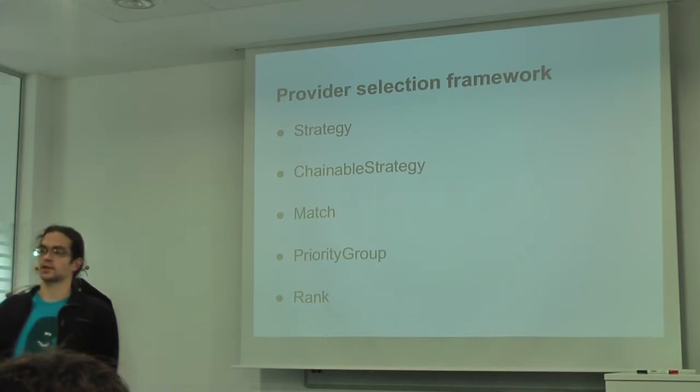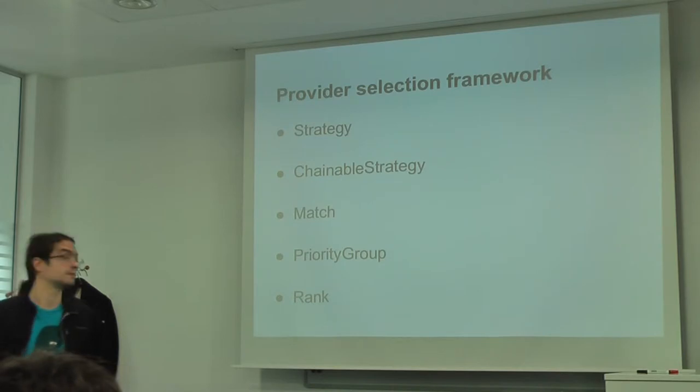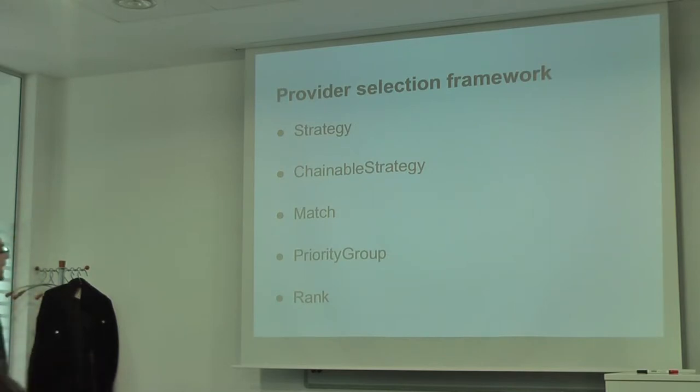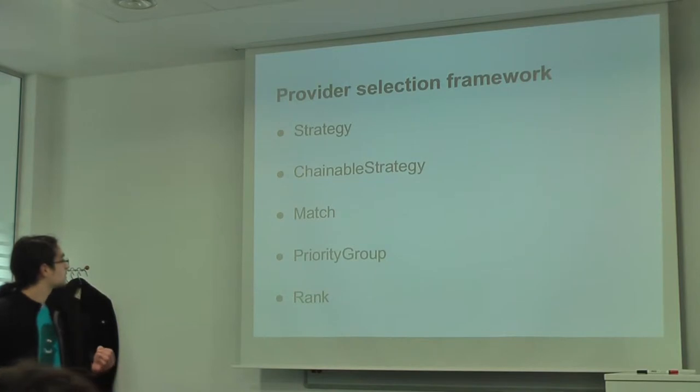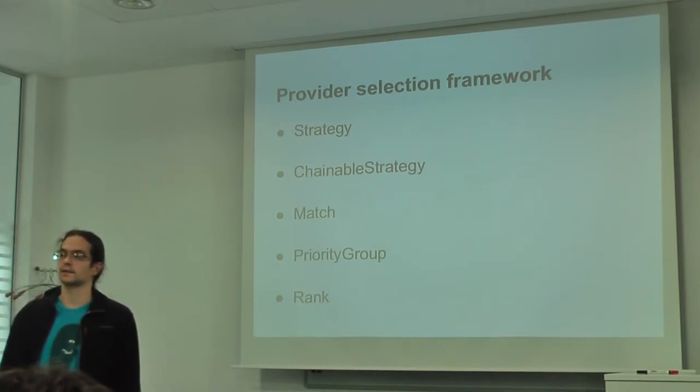When the provider selection chooses a match, it first goes to the priority groups and chooses the priority group with the lowest score, so it is also ranked from lowest to highest. But within the priority group, the matches are chosen with random probability. And also the match has the score, and it serves as the weight for the probability distribution.